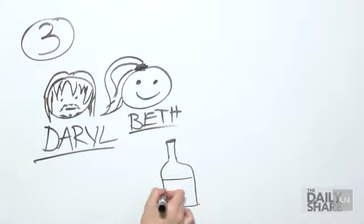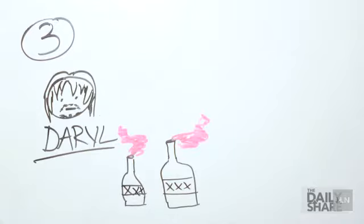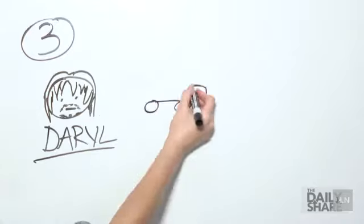Group three, Daryl and Beth. The two get drunk together and burn a house down. Later, Beth is mysteriously kidnapped.